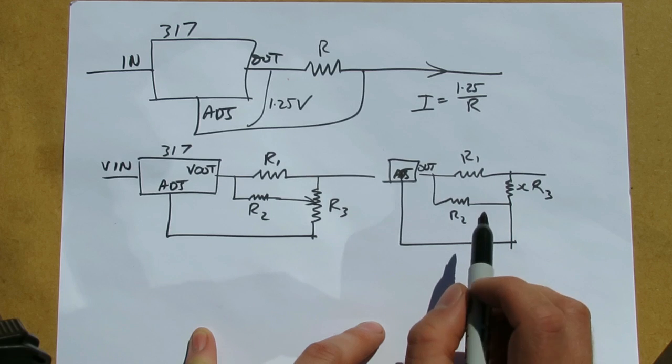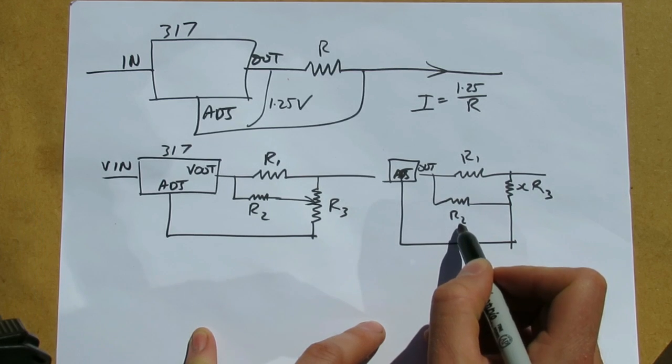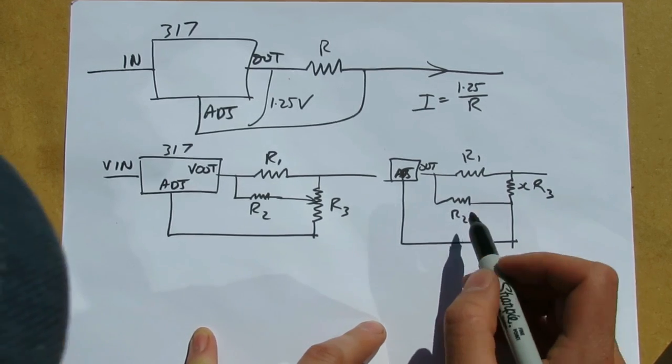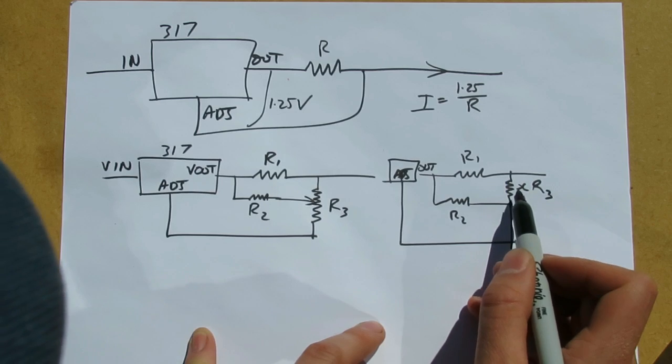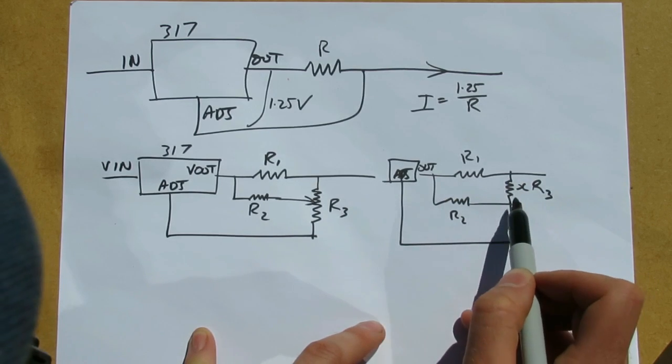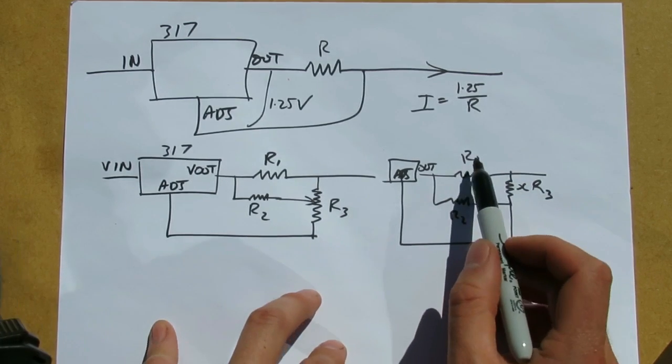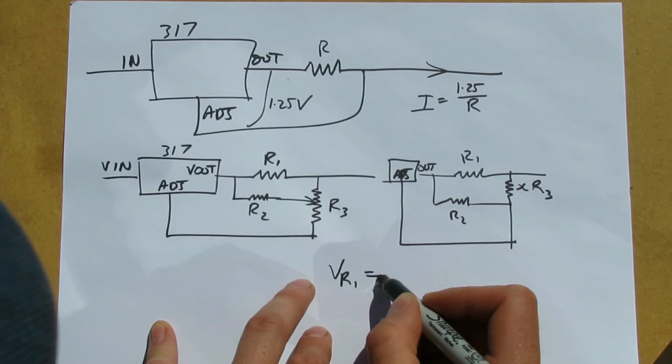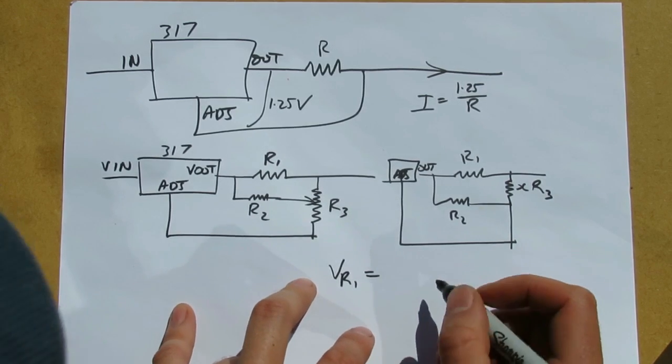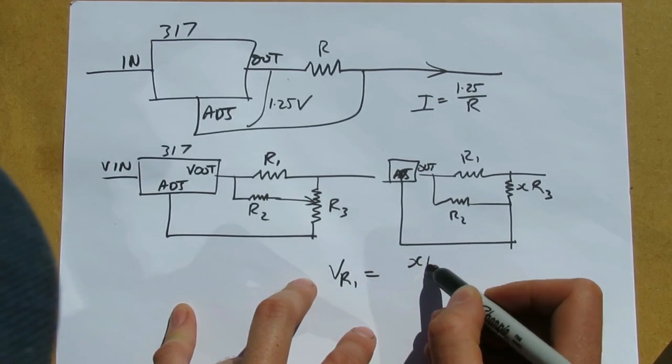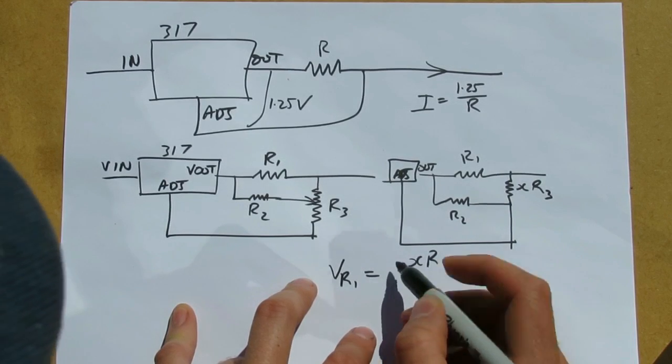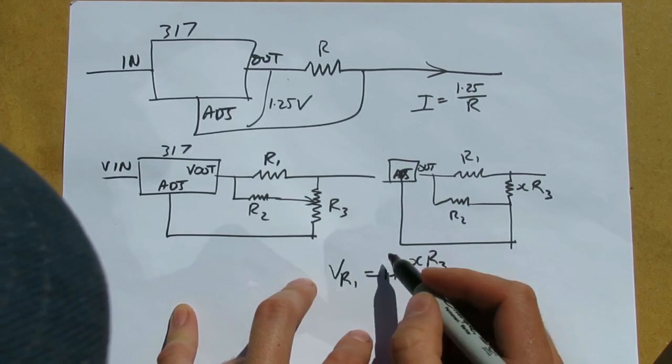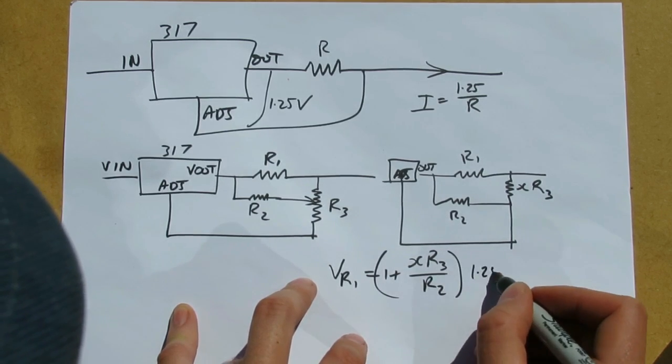The 317 ensures that the voltage between the output and the adjustment terminal is 1.25 volts, so it therefore ensures the voltage across R2 is 1.25 volts. Because R2 and XR3 form a resistive divider, the voltage across R1 is 1 plus XR3 over R2 times 1.25 volts.